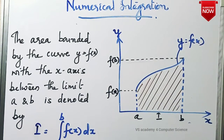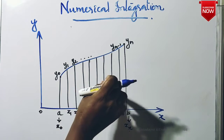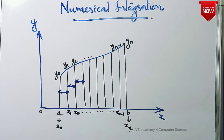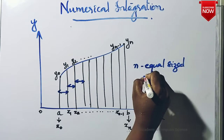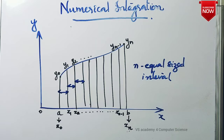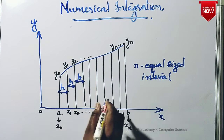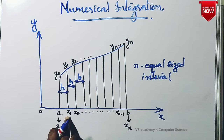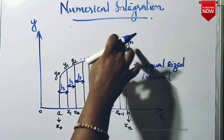How do we divide the interval? We divide the curve into equal sub-intervals from a to b. We introduce the first interval x1, and the next interval up to xn. On the y-axis we have y0, y1, and so on up to yn.